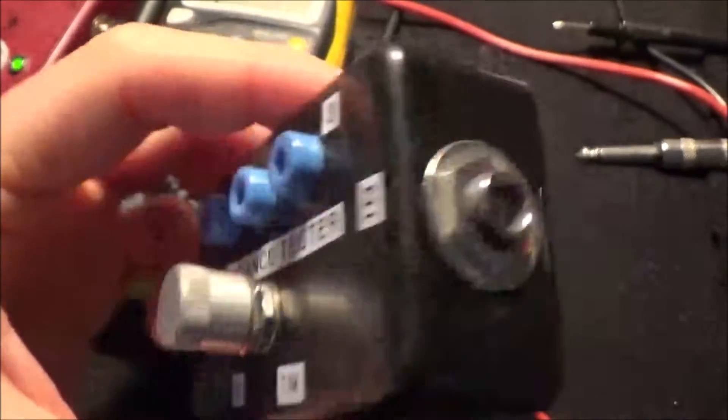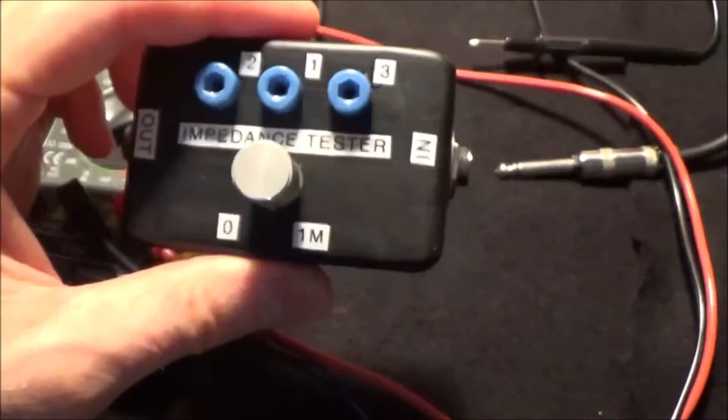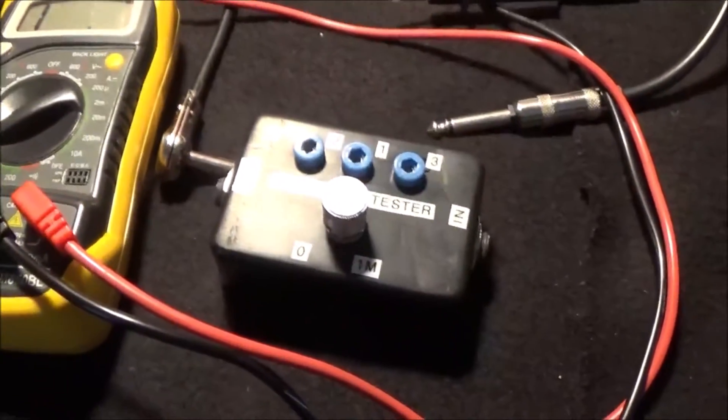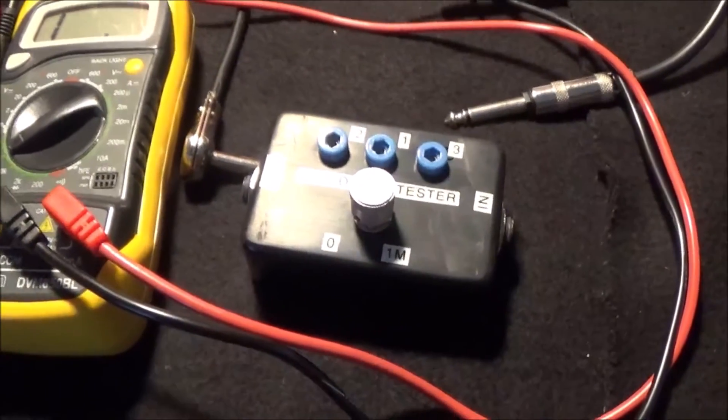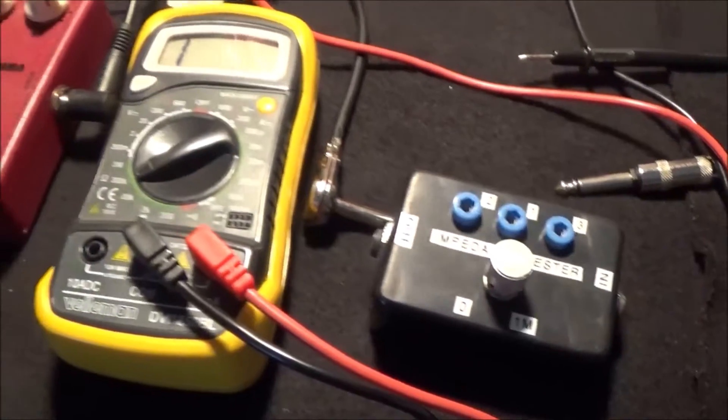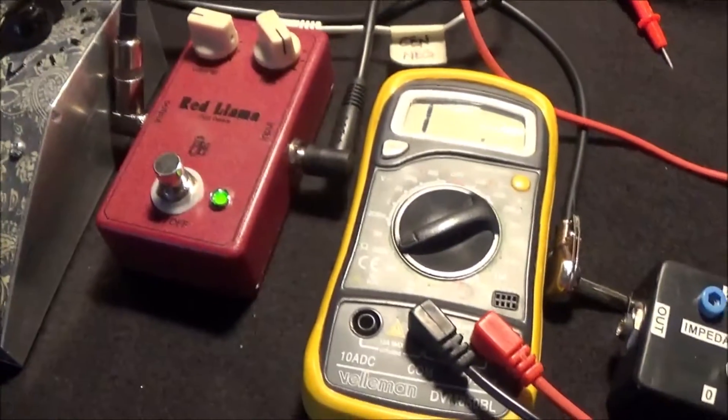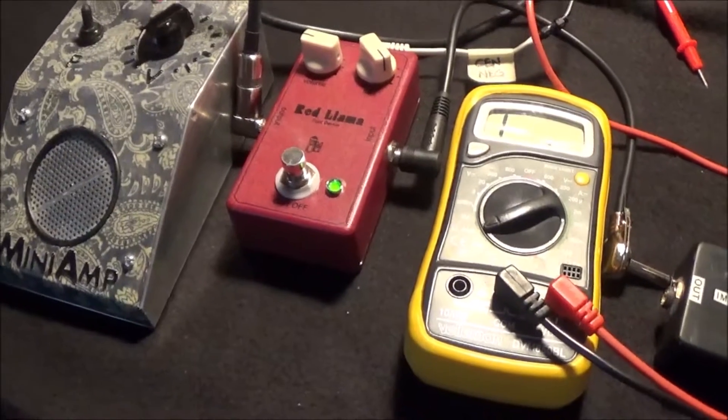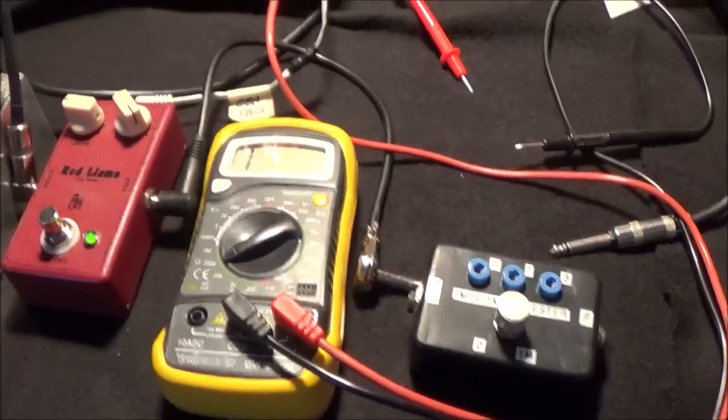A little bit of sanding down the enclosure and putting labels on it and the instructions on the back, and it's a handy little tool to have. It's another one of those things I don't use often, but when I need it it's really nice to be able to just plug stuff in and measure things. That's Craig Anderton's impedance tester. You might want to think about building one if you do a lot of guitar effects stuff.